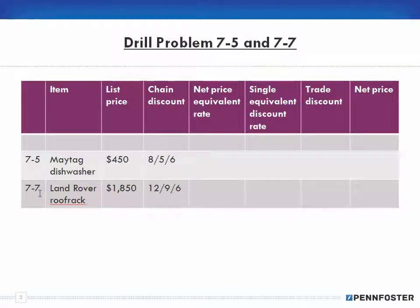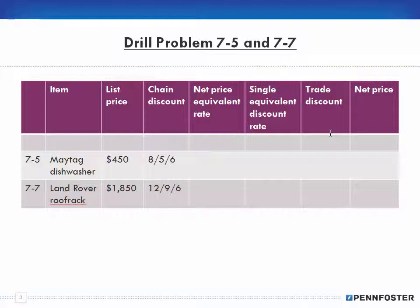Okay, 7-5. We have our item, our list price, our chain discount, single price equivalent rate, and single equivalent discount rate columns — also price and trade discount.